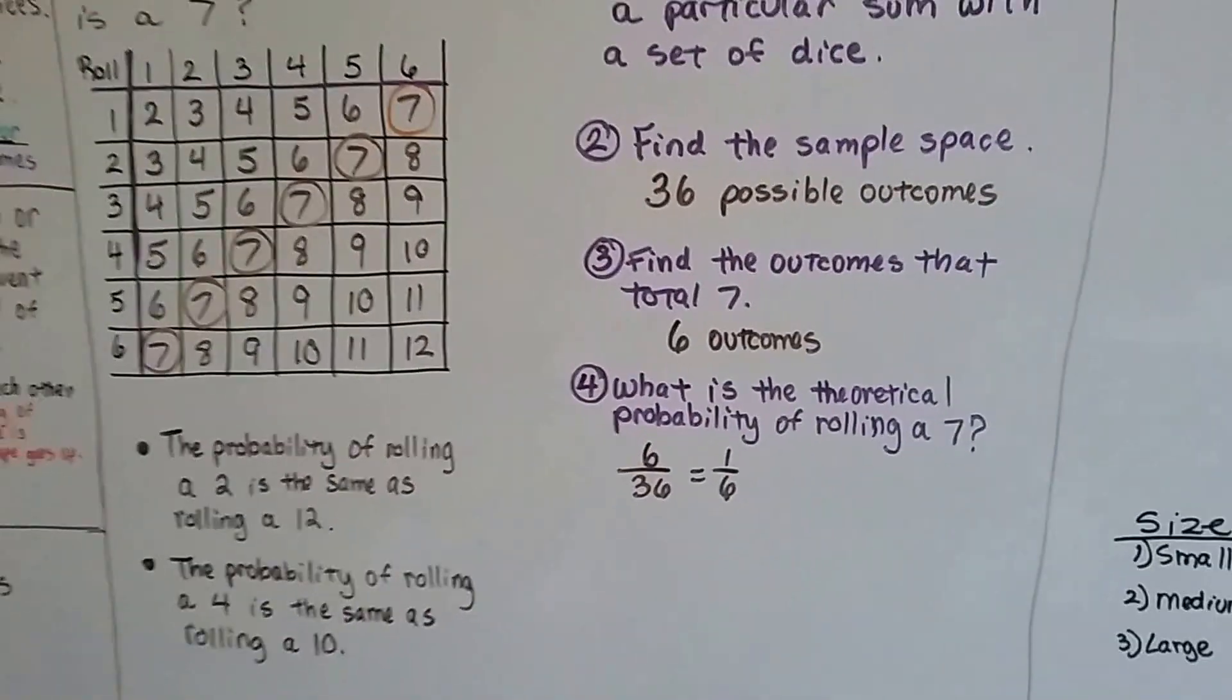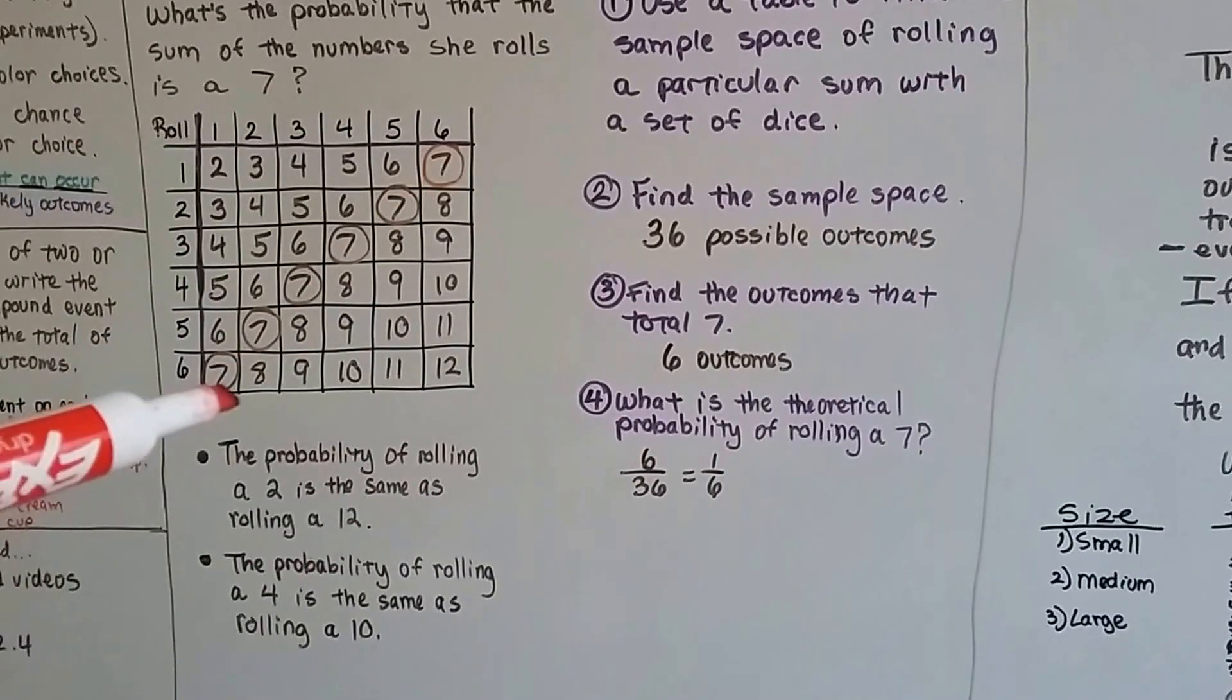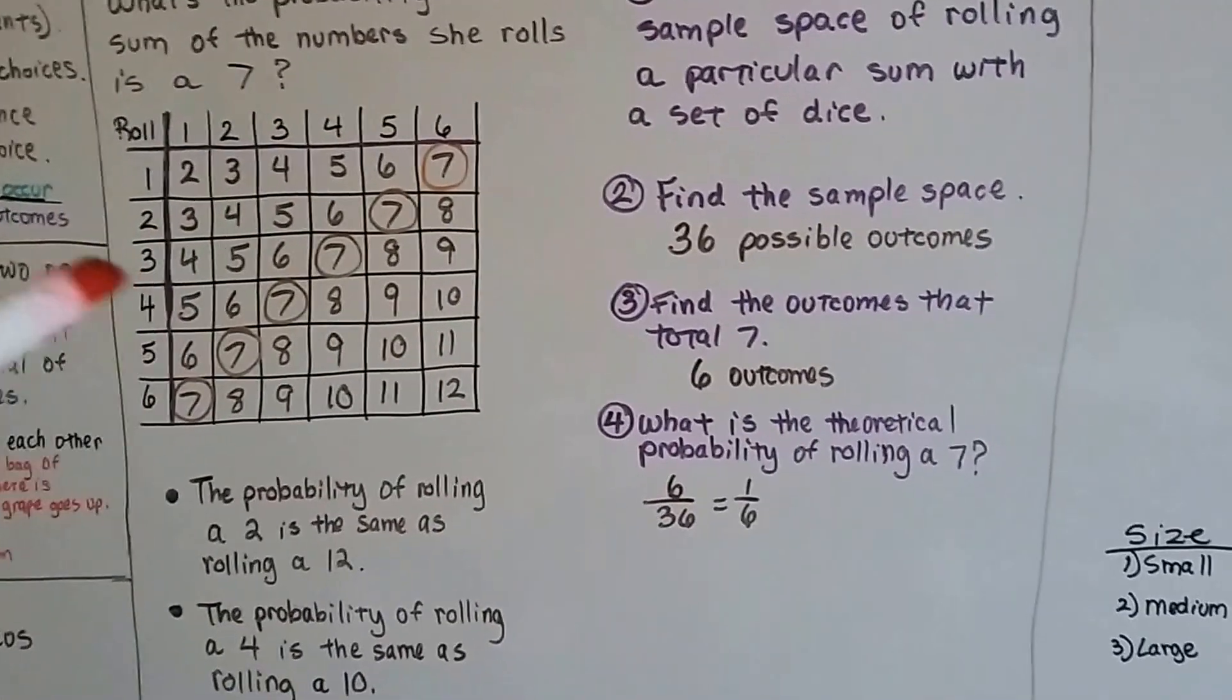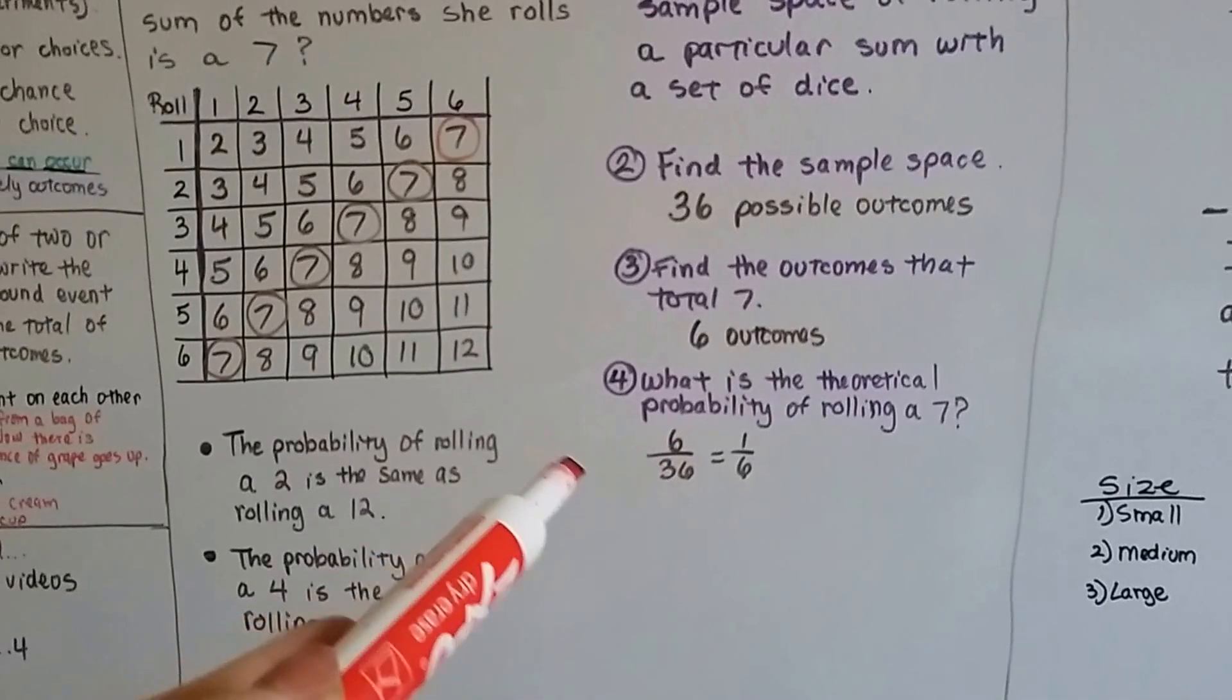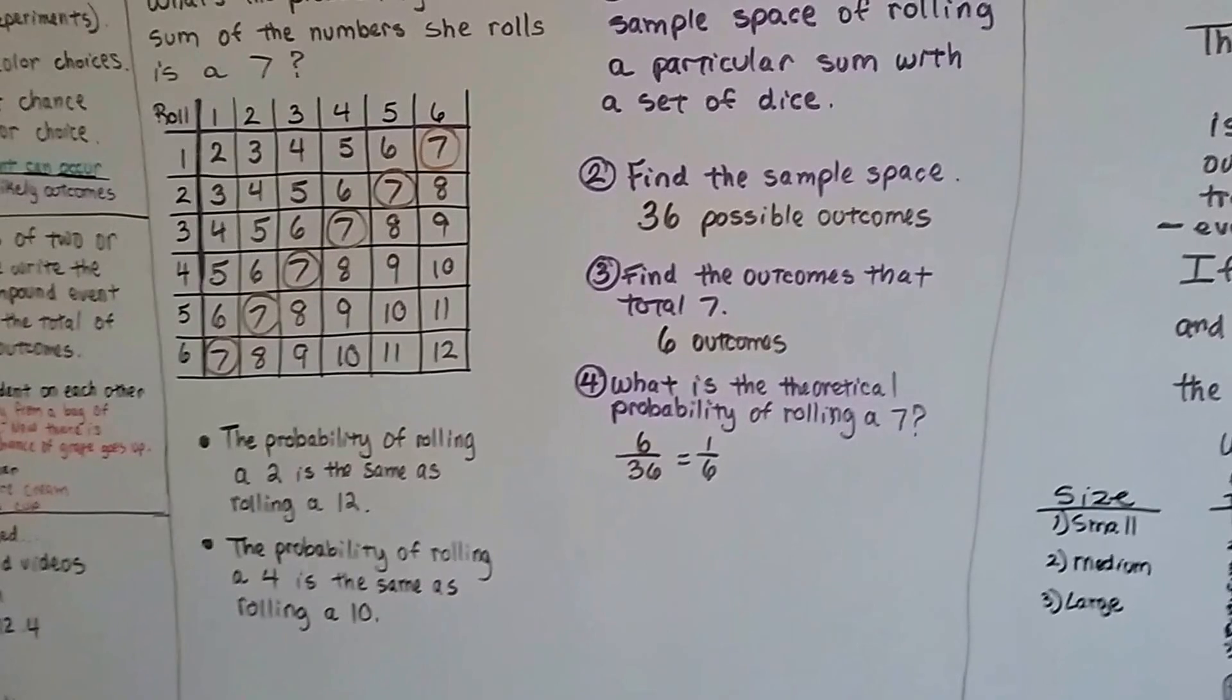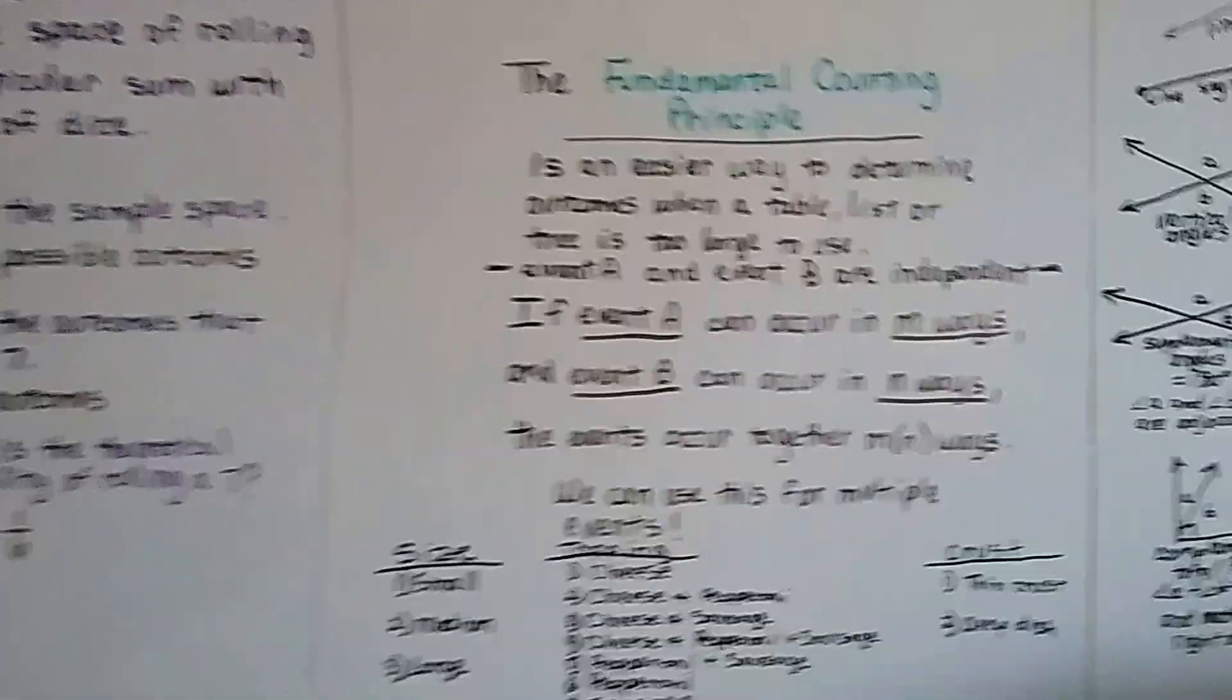That would be theoretical probability. We're not rolling the dice. We're just making a table to say this is what could happen. It's the number of ways the event can occur over the likely outcome. It could happen 6 different ways out of 36 ways, and we're not doing the experiment, so it's theoretical.